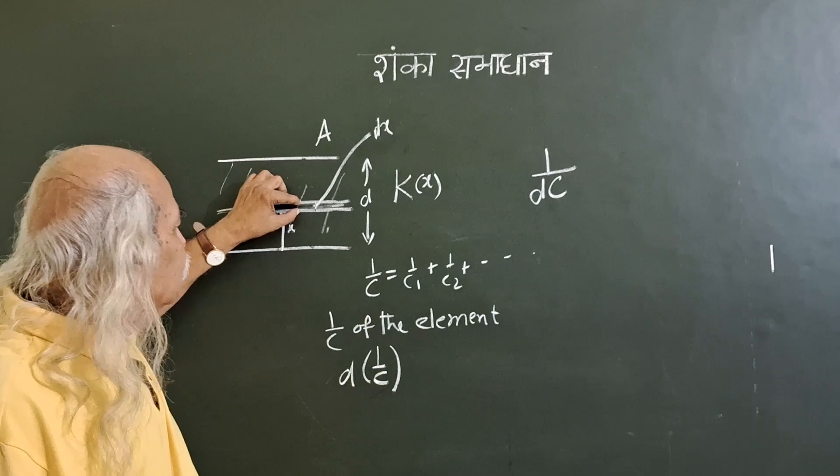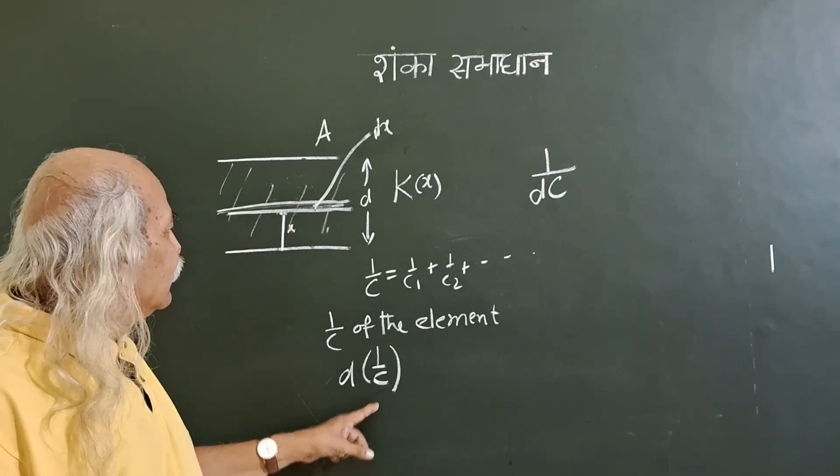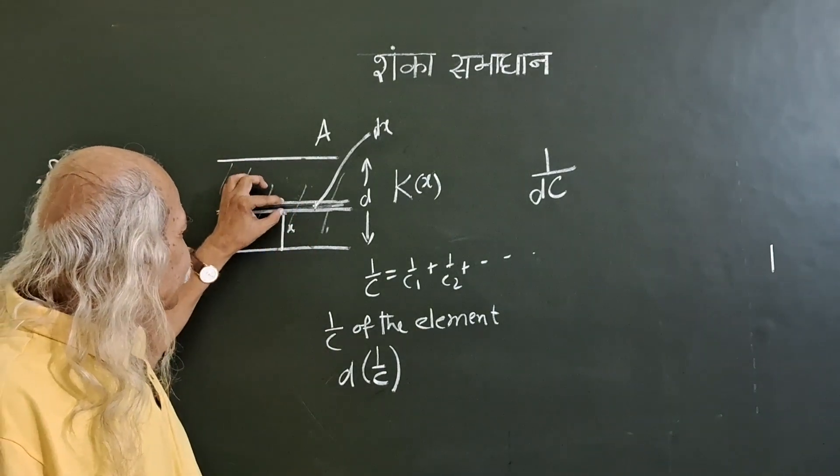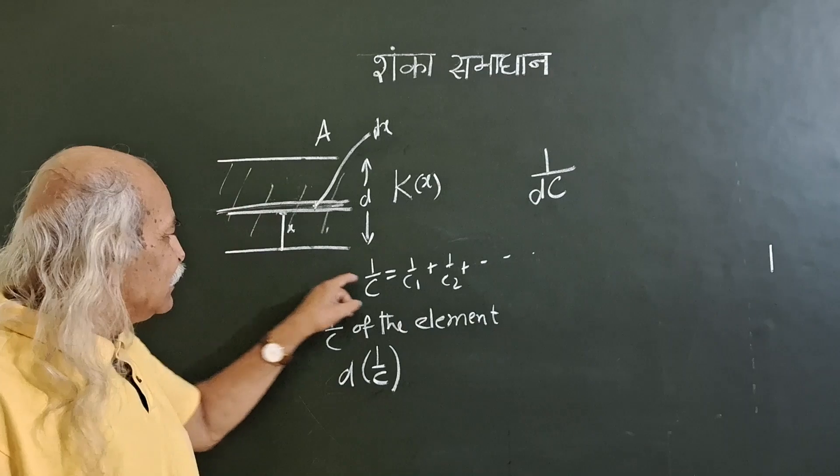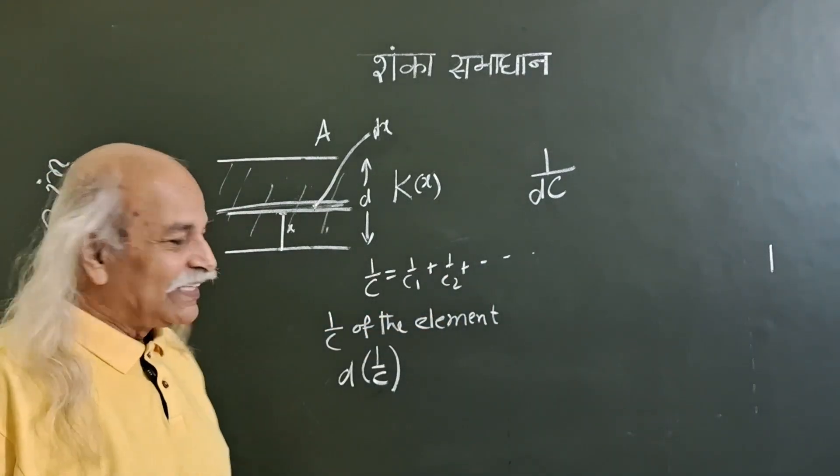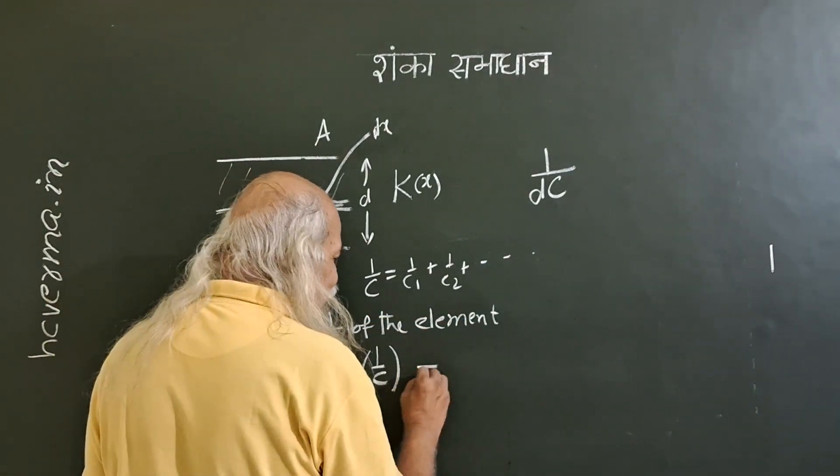So we take a small element, get its 1 by c, and then integrate, add all those 1 by c's to get the total thing. So this will be 1 by c.